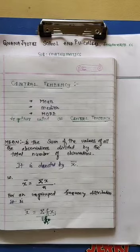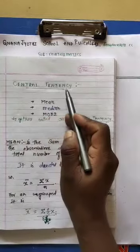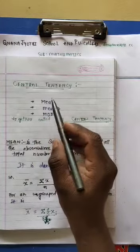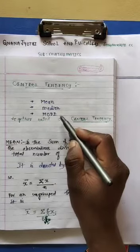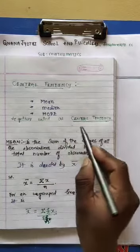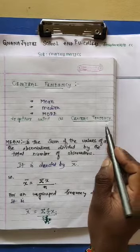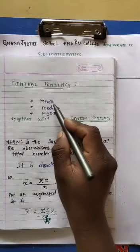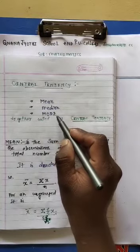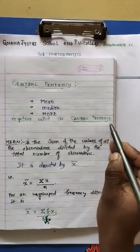Next, central tendency. What do you mean by central tendency? The mean, the median, and the mode together are called central tendency.